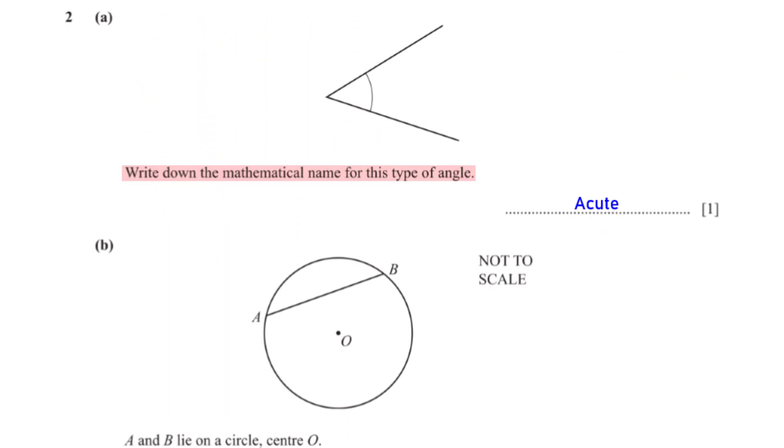Write down the mathematical name for this type of angle. The angle is less than 90 degrees, so it's an acute angle.